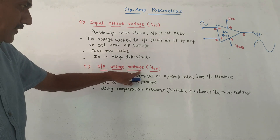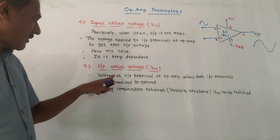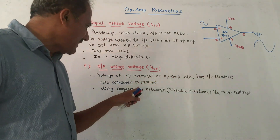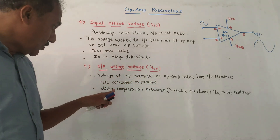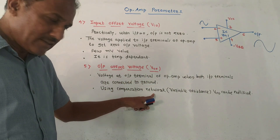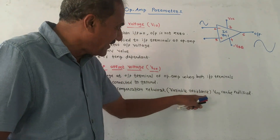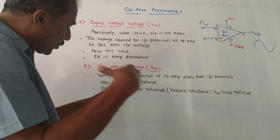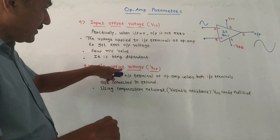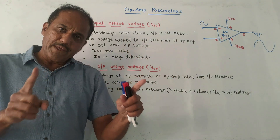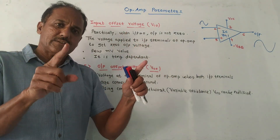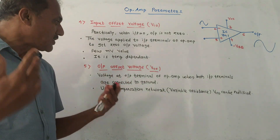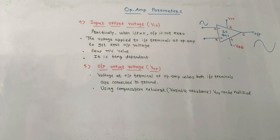The input offset voltage is in the range of 5 mV and it is temperature dependent. The next parameter is output offset voltage, notation VOO. It is the voltage at the output terminal of op-amp when both input terminals are connected to ground. Using a compensation network — that is, a variable resistance network — we can nullify this value. If this value is very small, that indicates the performance of the op-amp is much better.